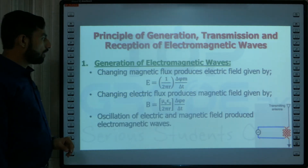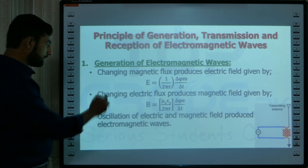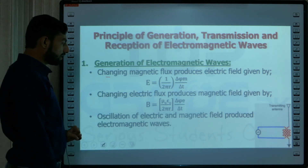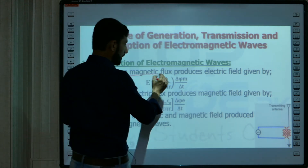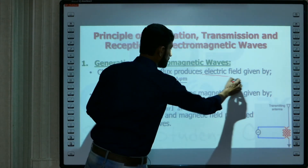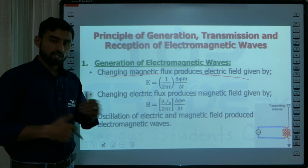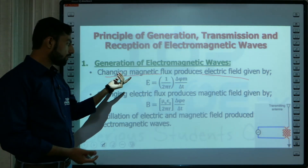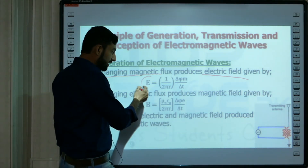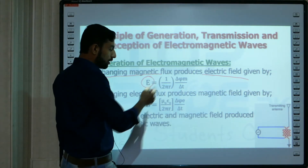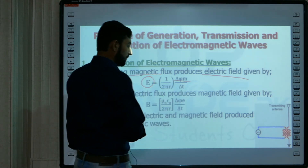So how do we generate electromagnetic waves? First, let's look at the mathematical model. To generate electromagnetic waves, we need a changing magnetic flux. That will produce a changing electric field. Whenever there is a change in the magnetic field, it will necessarily produce an electric field, and that is equal to 1 over 2 pi r, multiplied by delta flux-m divided by delta t.